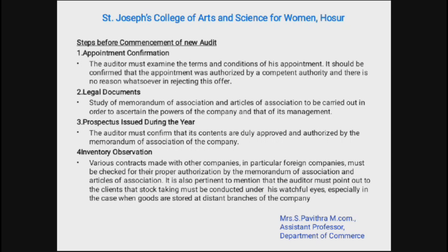Study of the memorandum of association and articles of association is to be carried out in order to ascertain the powers of the company and that of its management. Third, prospectus — during the year the auditor must confirm that its contents are duly approved and authorized by the memorandum of association of the company. Fourth, inventory observation — various contracts made with other companies, in particular foreign companies, must be checked for proper authorization.